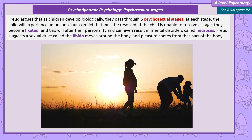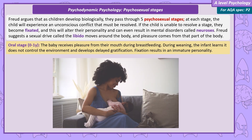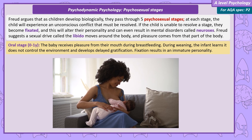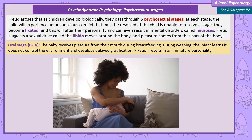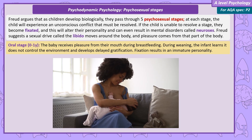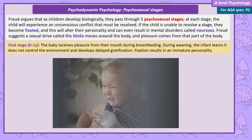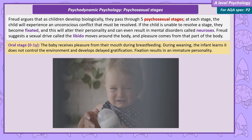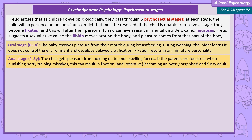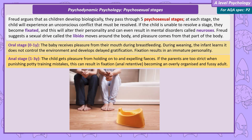At zero to one years, the child passes through the oral stage. The baby receives pleasure from their mouth during breastfeeding. The conflict happens during weaning — the ending of breastfeeding — where the infant learns it doesn't control the environment and develops delayed gratification. Fixation at this stage results in an immature personality. Between one and three years old is the anal stage. The child is being potty trained and gets pleasure from holding onto and expelling faeces. The most famous fixation here is anal retentive, occurring if parents are too strict during potty training, resulting in someone who is overly organised and fussy.